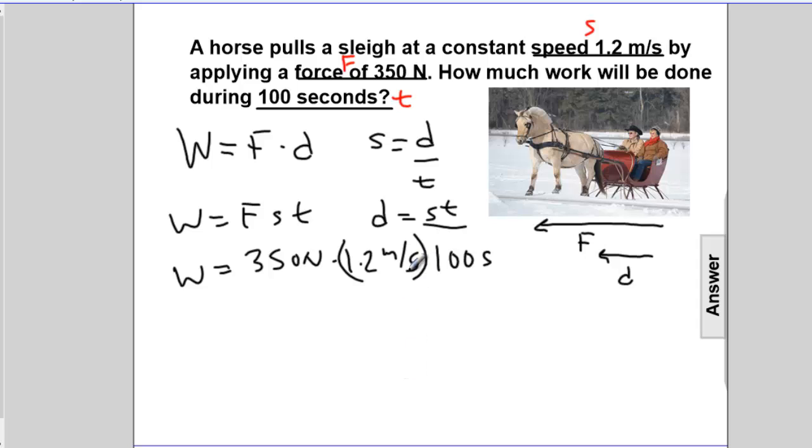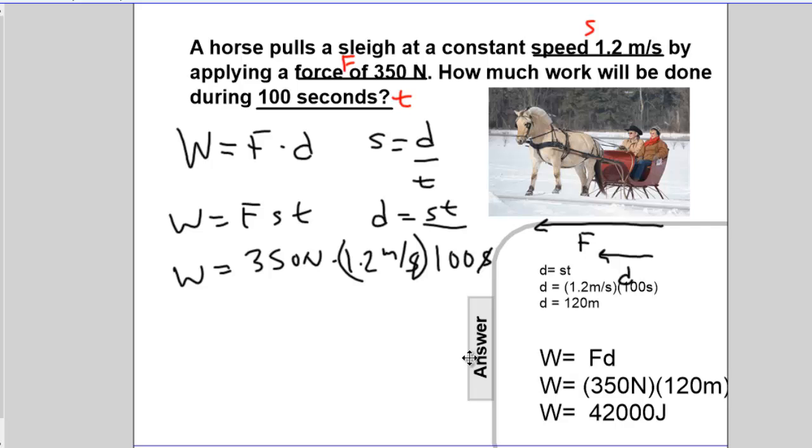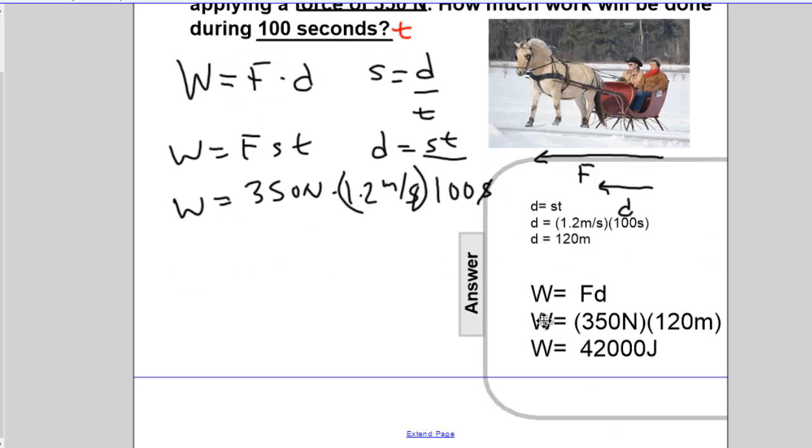And we'll have cancellation. Seconds will cancel seconds. 350 times 1.2 times 100. We'll reveal the answer is 42,000 joules worth of work being done on this sleigh.